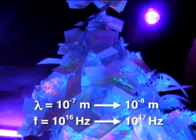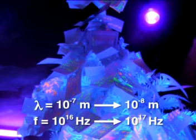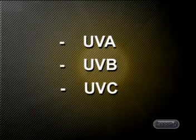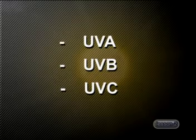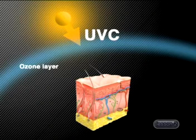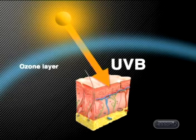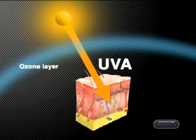The next section of the spectrum is ultraviolet radiation. This has wavelengths between 10 to the minus 7 meters and 10 to the minus 8 meters, and frequencies between 10 to the 16 hertz and 10 to the 17 hertz. There are three main types of UV radiation: UVA, UVB, and UVC. The main source is the sun. UVC is blocked out by ozone in the atmosphere. UVB radiation penetrates the epidermal layer of the skin and causes sunburn. UVA radiation penetrates right to the dermis of the skin, which can cause skin damage and cancer.